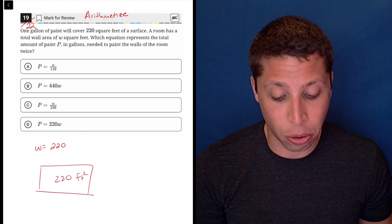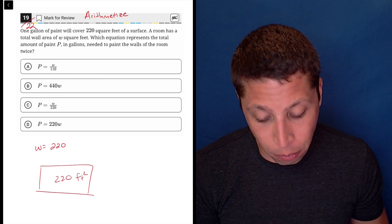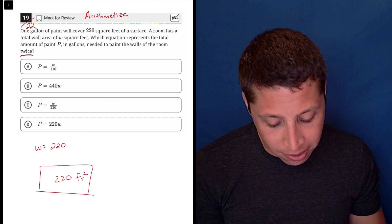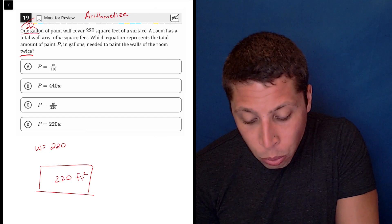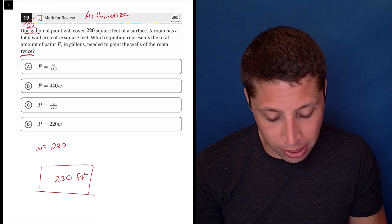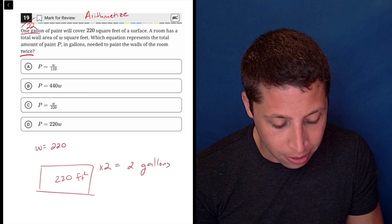Which equation represents the total amount of paint, P, in gallons needed to paint the walls of the room twice? So that's a weird little thing and they're kind of sneaking at the end. If we have to paint it twice, then we need two gallons of paint, right? Because if one gallon covers the 220, then we need two. So times two equals two gallons of paint.